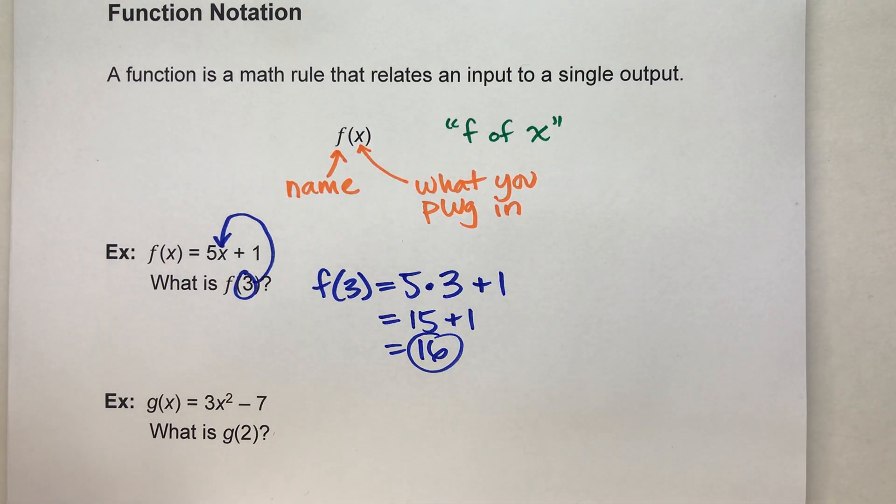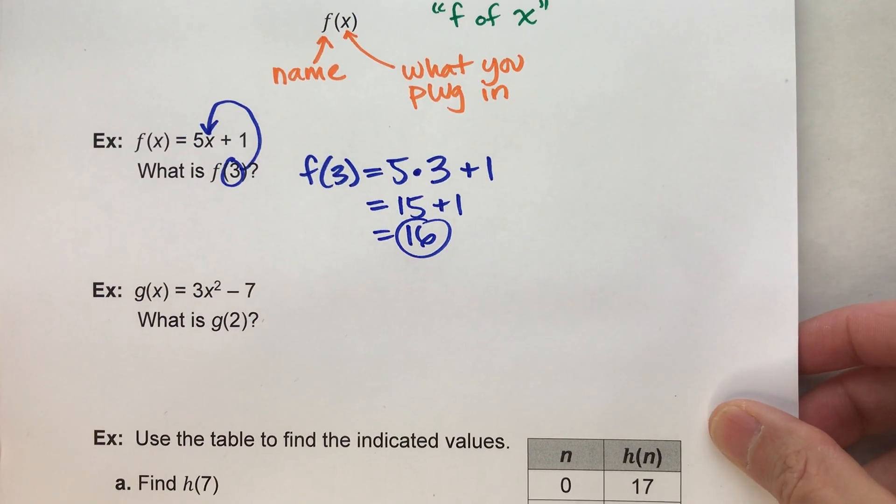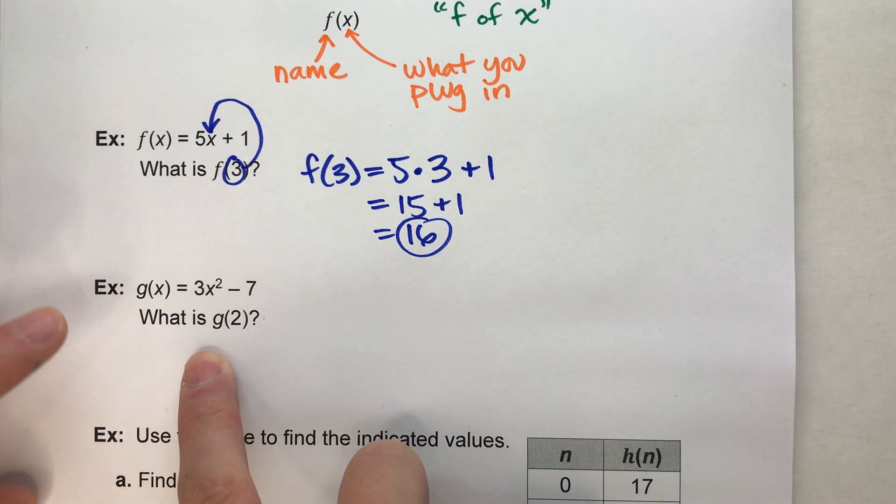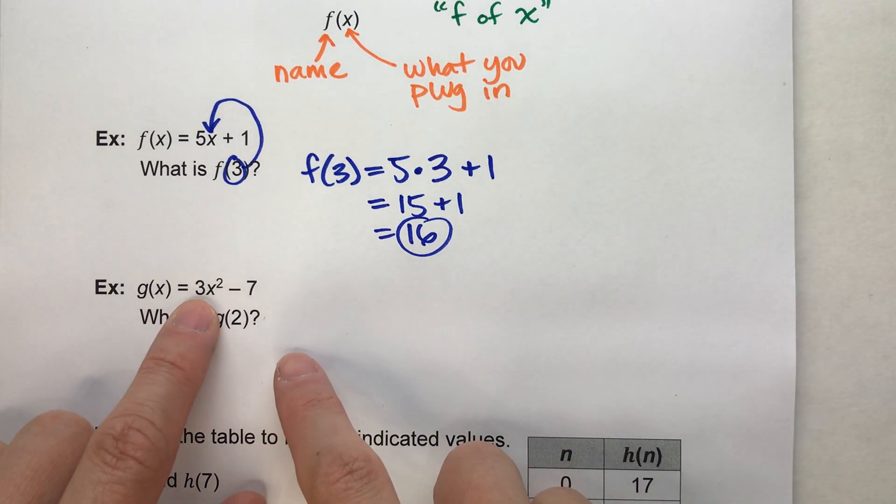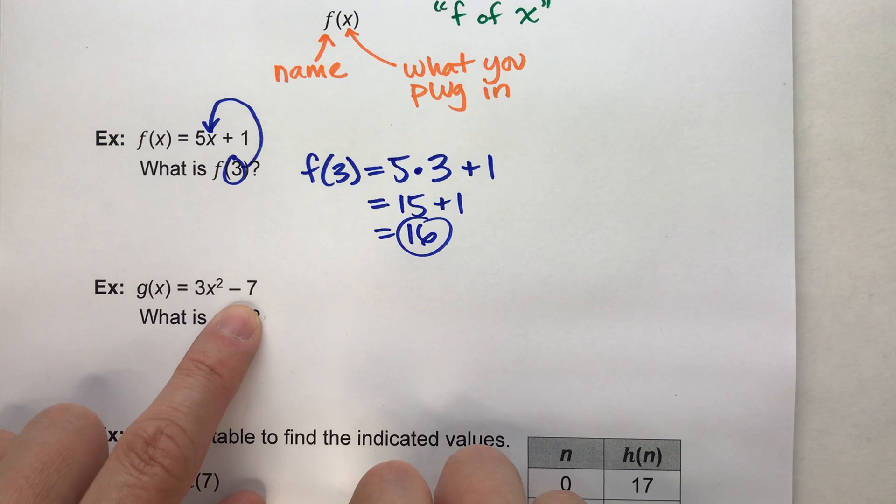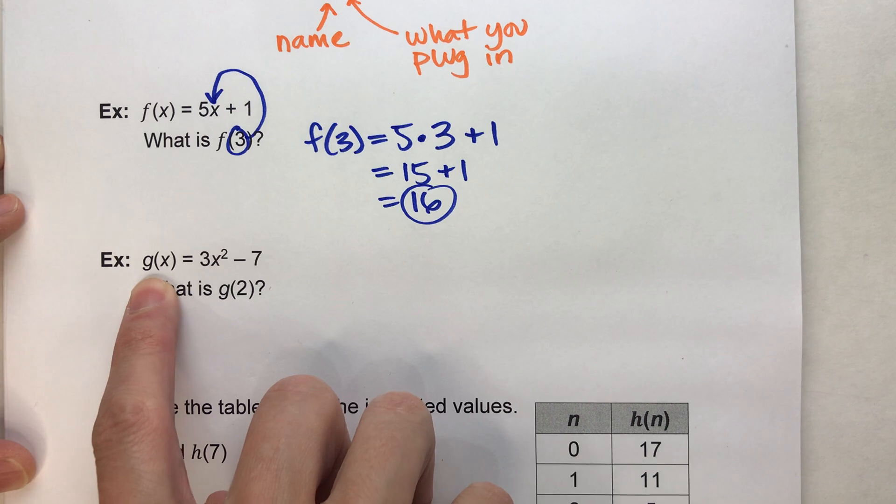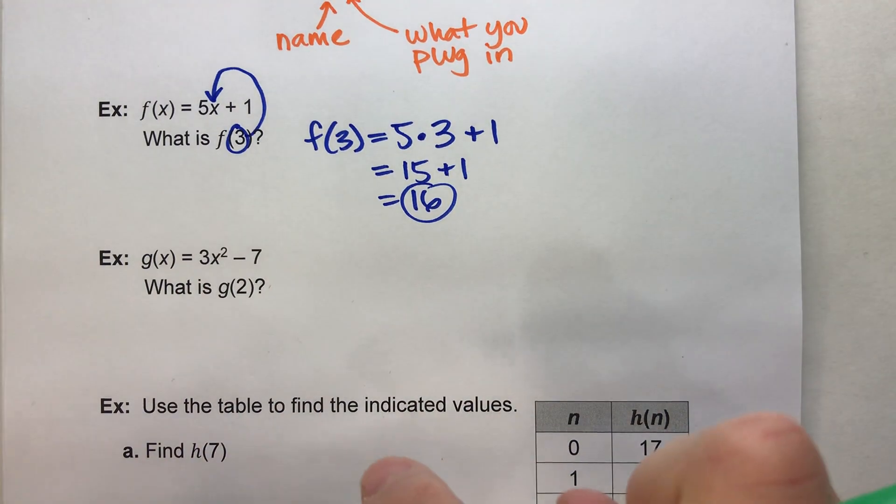And function rules can be all kinds of different math equations. That was a pretty basic one, here's a slightly harder one. This one says g of x is equal to 3x squared minus 7, what's g of 2? So notice, this is a different rule, it's got a different name, g.